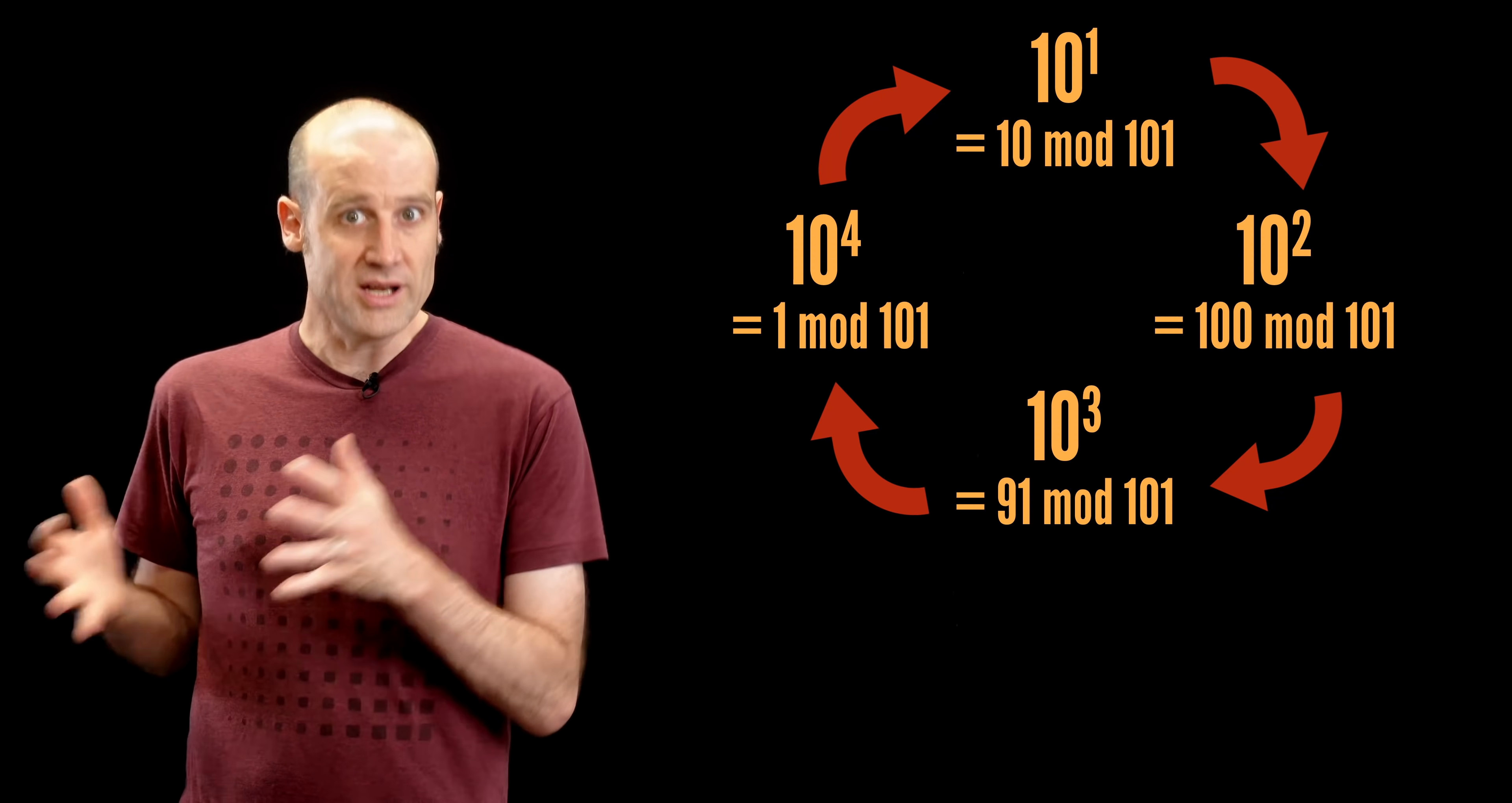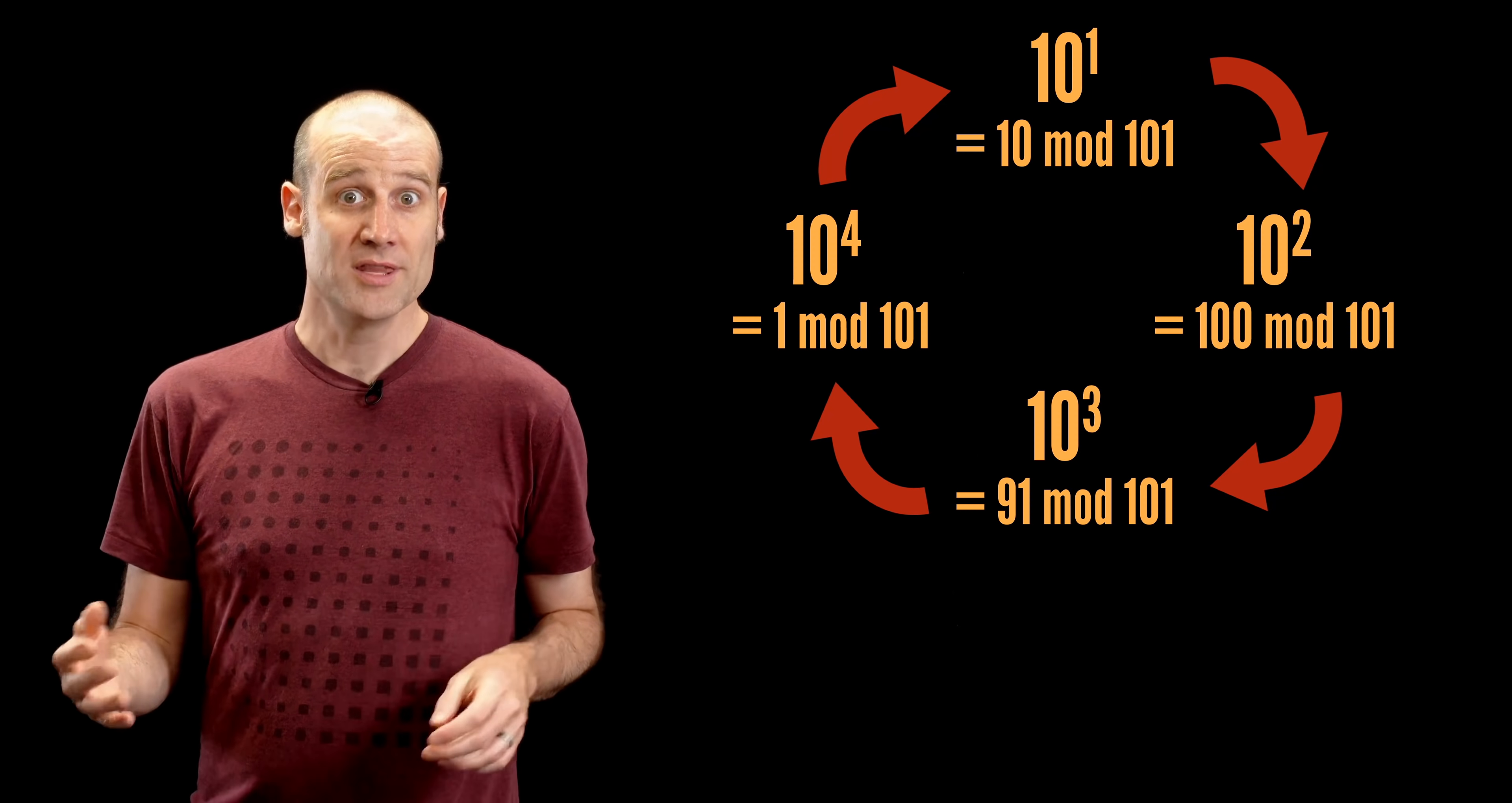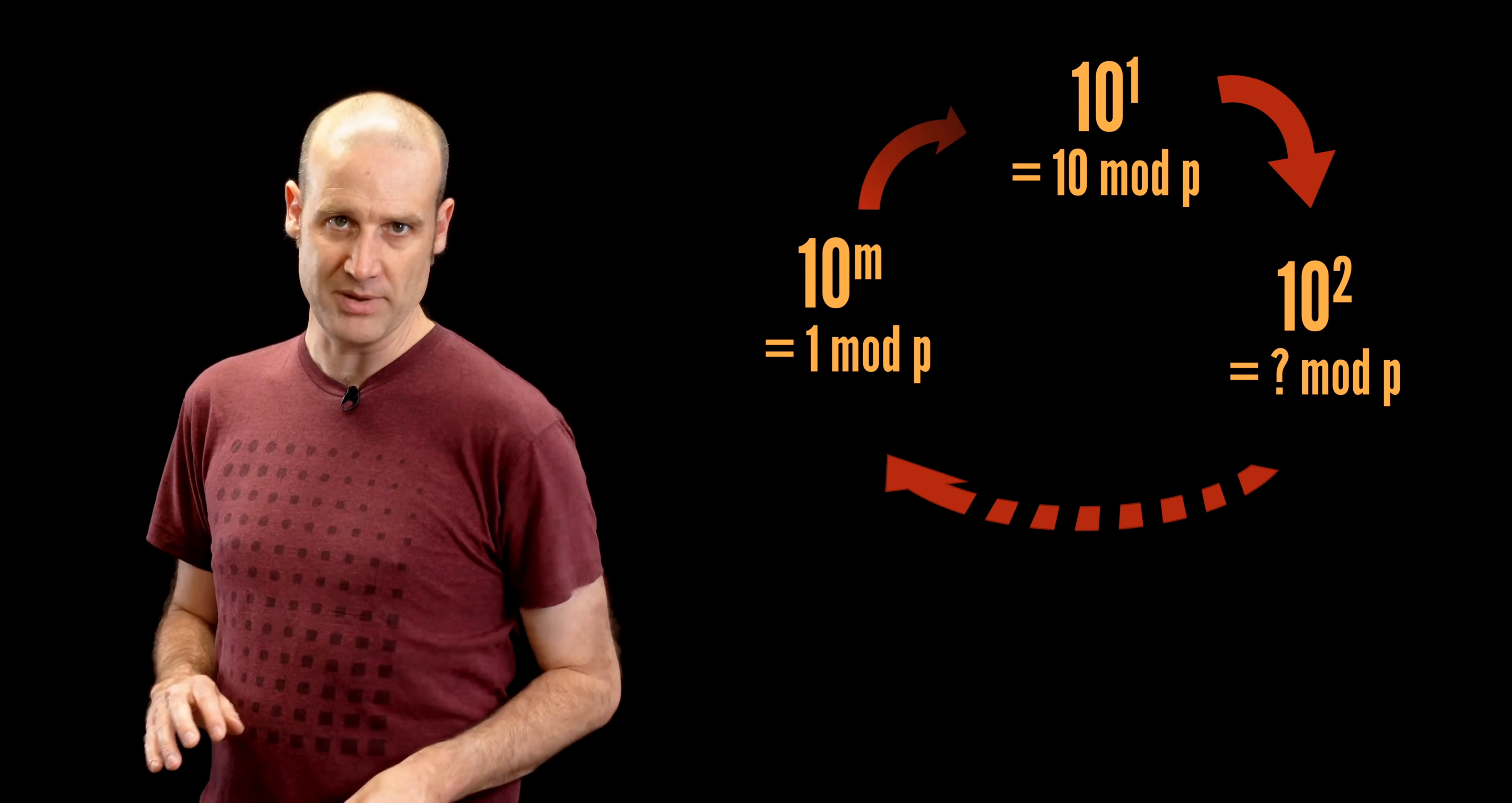So we know for any prime we pick, there will be some order, some size of the cycle for powers of 10. We also know the very last one will be equal to 1 mod that prime. It's because the first one is always equal to 10 mod that prime, for primes bigger than 10.